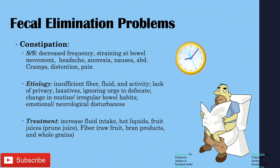Fecal elimination problems — constipation. Signs and symptoms include decreased frequency, straining at bowel movement, headache, anorexia, nausea, abdominal cramps, distension, and pain. Causes include insufficient fiber, fluid, and activity; lack of privacy; chronic use of laxatives; ignoring the urge to defecate; changing routine; and emotional or neurological disturbances. To treat constipation, increase fluid and fiber intake, drink hot liquids, and include fruit juices such as prune juice. Patients should try to defecate at the same time each day.